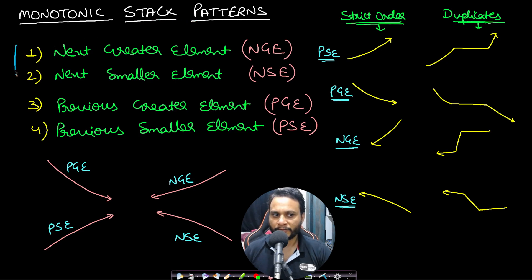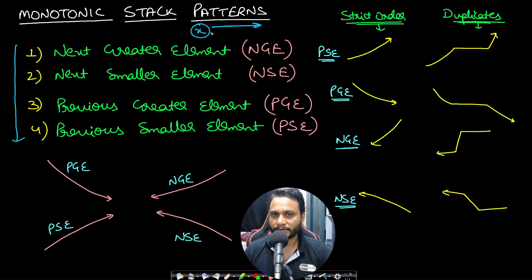There are 4 important patterns when it comes to monotonic stack, solving 4 different types of problems which look similar: next greater element, where given an array and an element x, we find the nearest element on the right-hand side which is greater than or greater than or equal to x. There are two types of definition depending on the equality check.